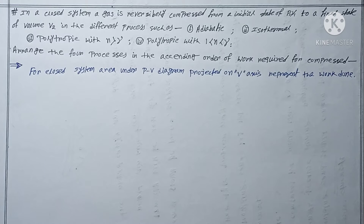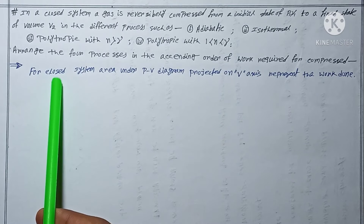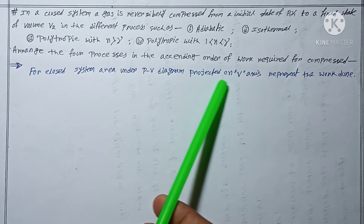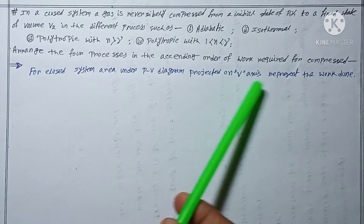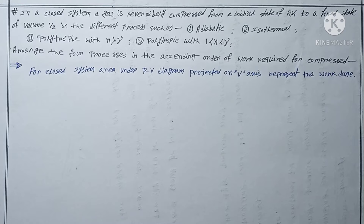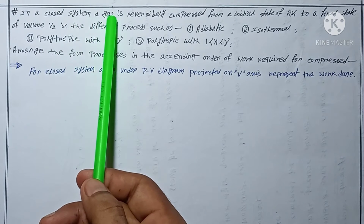Before solving the question, I want to inform you — as I told you in the previous video — that for a closed system, the area under the PV diagram projected on the V axis represents the work done. I think that is known to all of you. Now read the question carefully.